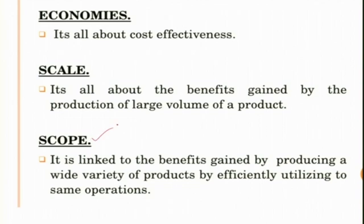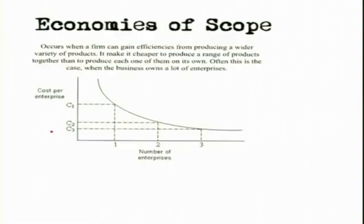Economies of scope, instead of being about volume, is linked to diversity — that means variety. It is linked to the benefits gained by producing a wide variety of products by efficiently utilizing the same operations. It occurs when a firm gains efficiencies from producing a wider variety of products, making it cheaper to produce a range of products together than to produce each one on its own. This is often the case when a business owns many enterprises.